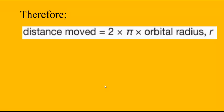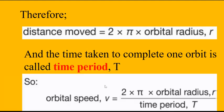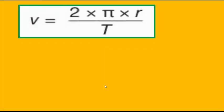Therefore, distance moved is equal to 2π times orbital radius r, and the time taken to complete one orbit is called the time period capital T. So orbital speed v equals 2 times π times orbital radius r divided by time period T. In symbols: v = 2πr/T.